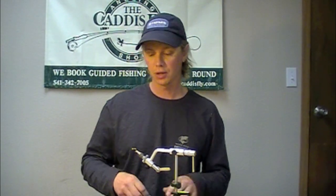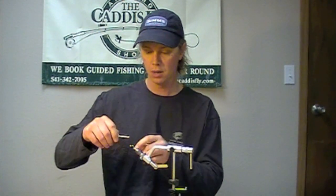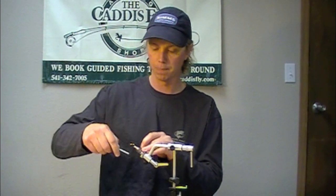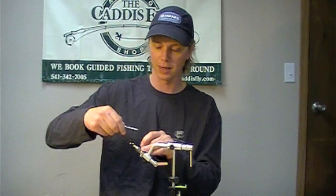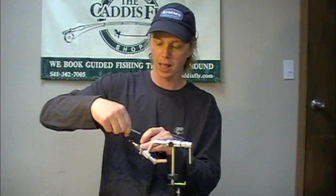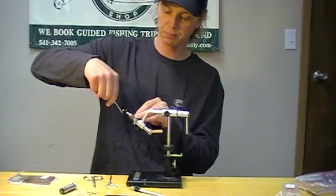Today we're going to be tying a UV mini stone. I've got a size 6, 2457, and a copper bead. Adjust the size of the bead to the fly that you're tying. Probably tie these down to about a size 10. I'm going to make a thread wrap base of black 6-aught unithread all the way down just past the barb.